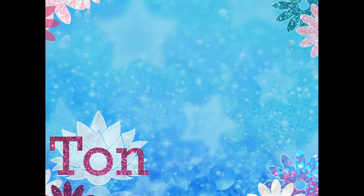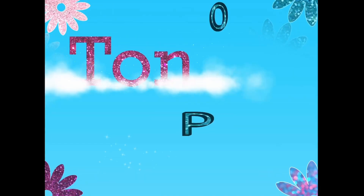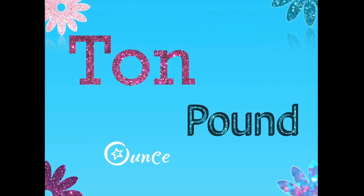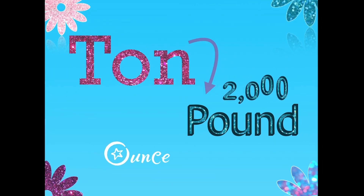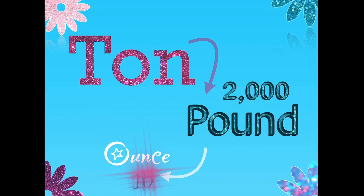And like this we are done with the ton. Now let's see the relationship between the three units. One ton is equal to two thousand pounds. Can you imagine how heavy one ton is? What about the pound and ounce? One pound is equal to sixteen ounces. And that's the relationship between each one of them. Thank you so much for watching, bye bye.